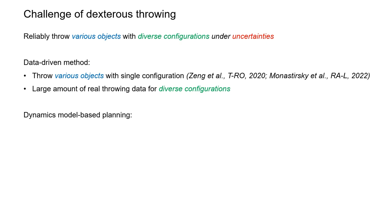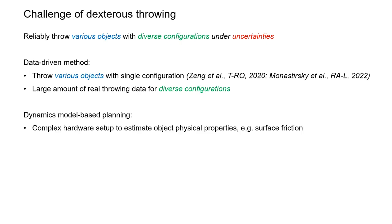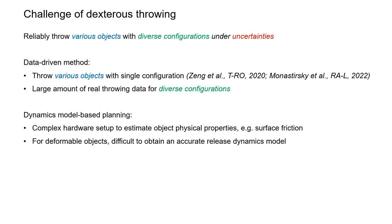On the other hand, dynamics model-based planning would require complex hardware setup to estimate physical properties of individual objects like surface friction. For deformable objects, it is also very difficult to obtain an accurate model to describe the finger-object interaction during the release. Instead of seeking an intricate model, we would like to first ask: how do various objects differ in throwing outcomes?